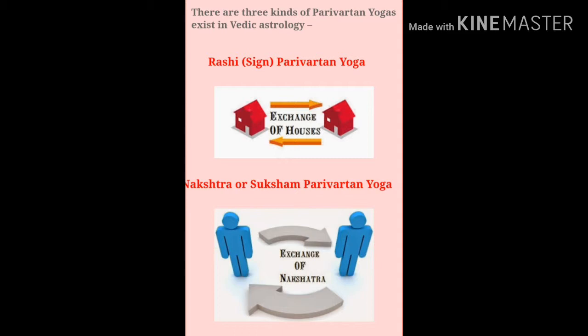The second type of Parivartan Yog is called Nakshatra or Sushma Parivartan Yog. This is when planets are mutually placed in each other's Nakshatras — that is, say the Sun is placed in a Nakshatra owned by Saturn and Saturn is placed in a Nakshatra owned by the Sun at the same time. However, this is a less effective Parivartan Yog compared to Rashi Parivartan Yog. There is also a third type which is basically the exchange of houses by Karakas.